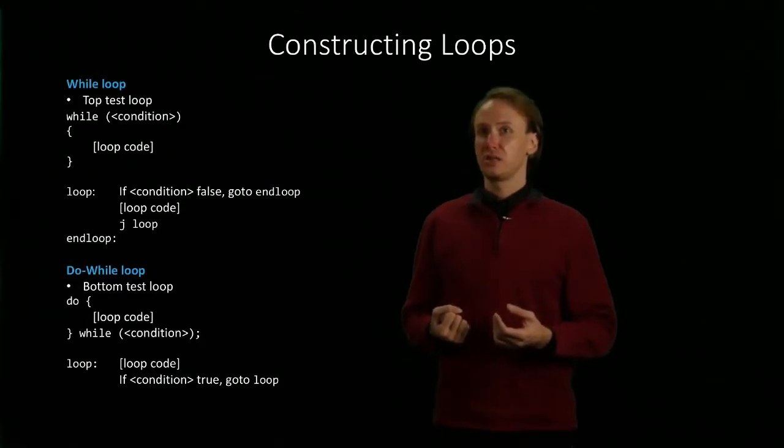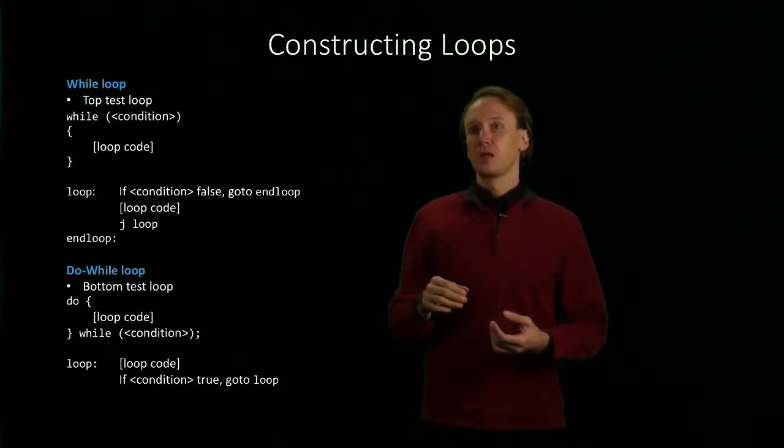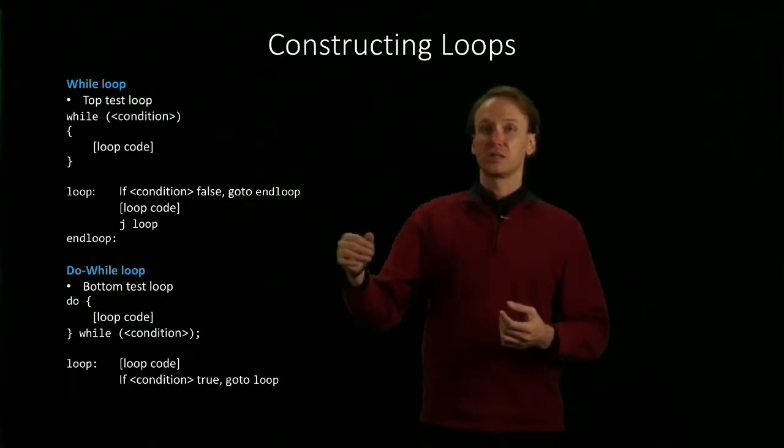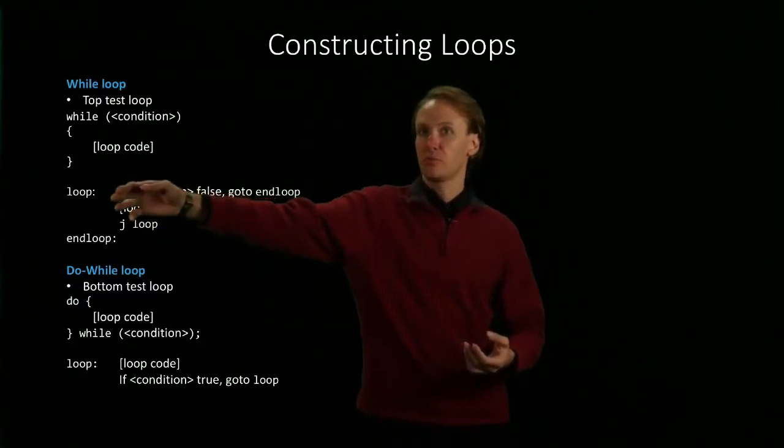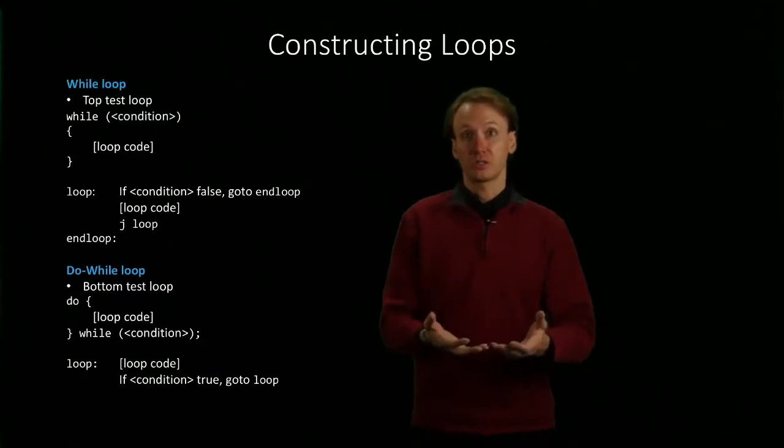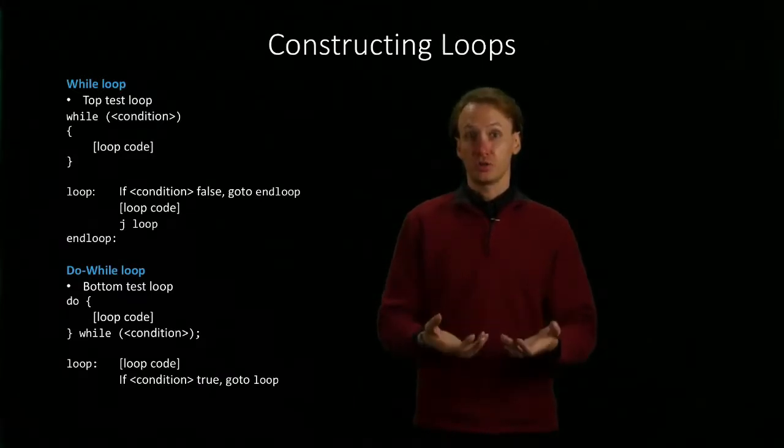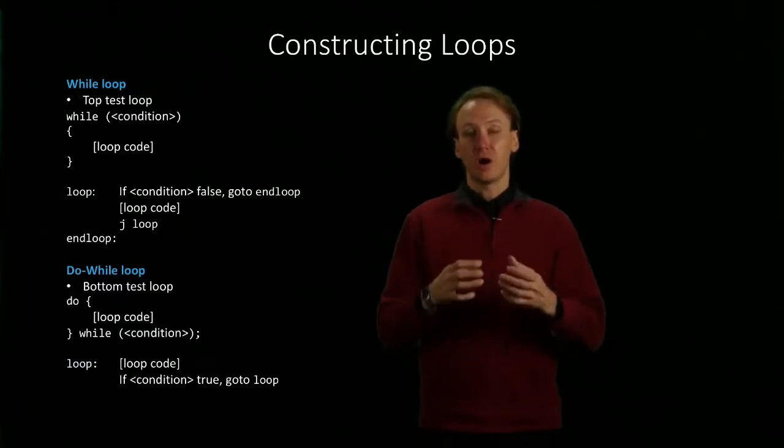In a language like C or Java, our while loop might have this form, and that's going to translate into something that looks about like this in assembly language. We have our loop label that tells us where our loop actually starts, and we follow that up with our condition that determines whether or not we run the body of the loop.